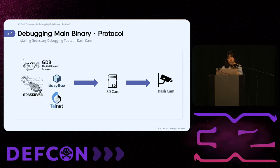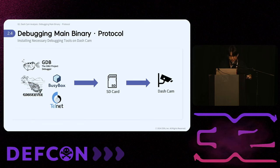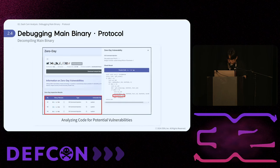Now, he will discuss the process of debugging the main binary. Hi, I'm Hanyeol Park. I'll continue the presentation by discussing the next topic. For convenience, tools such as GDB and Pwndbg can be stored in the SD card directory for easy access. We decompiled the main binary and tracked vulnerable functions such as system, popen, strcpy, gets, and scanf for code analysis.